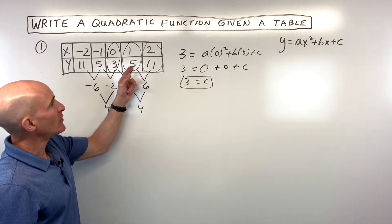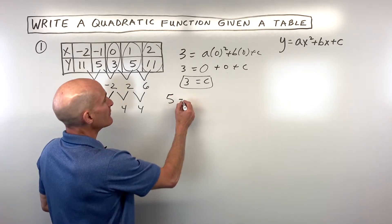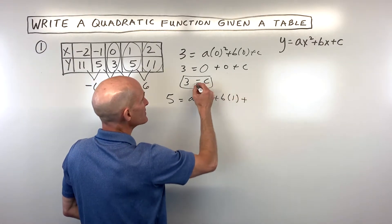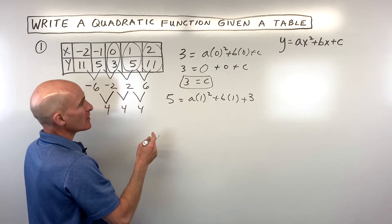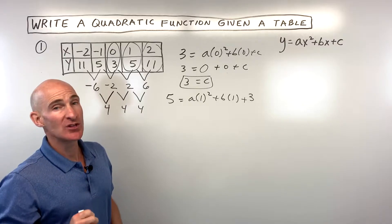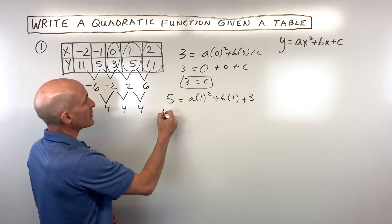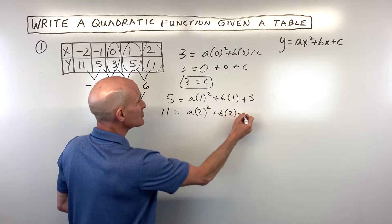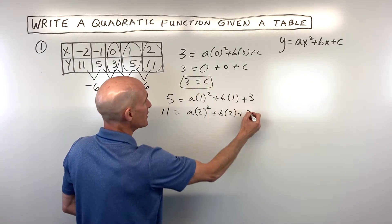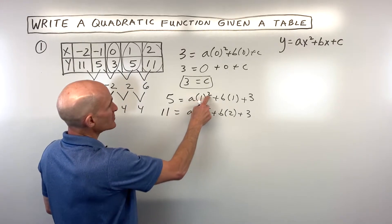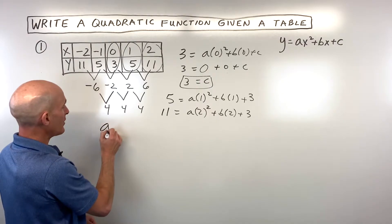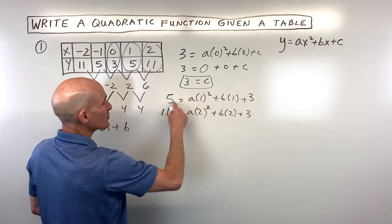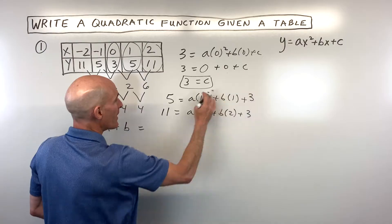Now we know c, so how do we solve for a and b? Let's take the point where y is 5 and x is 1: 5 equals a times 1 squared plus b times 1 plus c, and I'll put 3 in for c. With two variables we need two equations, so let's take the point where y is 11 and x is 2. Simplifying: 1 squared is 1 times a is a, plus b, plus 3 equals 5, so a plus b equals 2.